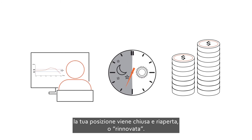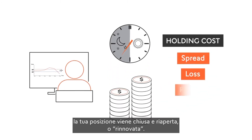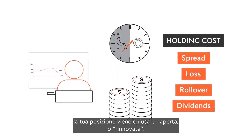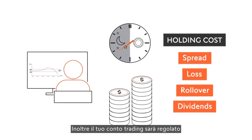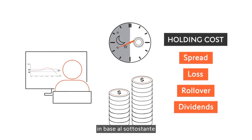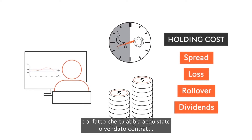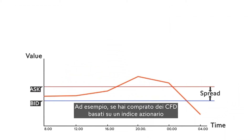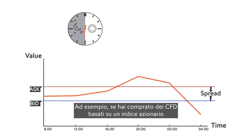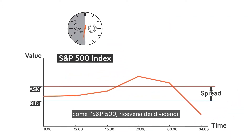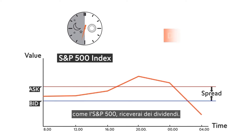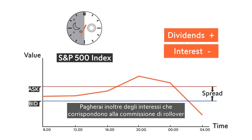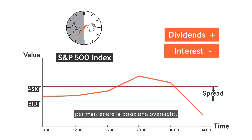Your position is closed and reopened, or rolled over. In addition, your trading account will be adjusted depending on the underlying asset and whether you have bought or sold contracts. For example, if you have bought CFDs based on a stock index like the S&P 500, you will receive dividends. You will also pay interest that corresponds to the rollover fee to maintain your position overnight.